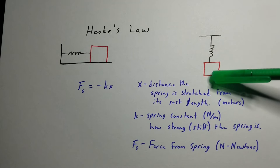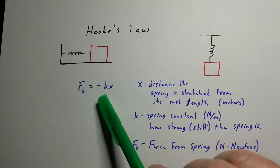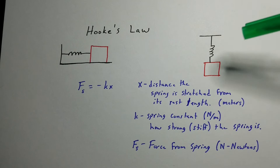Same thing over here. If I pull this down, the spring will want to pull up. If I push up, the spring will want to push back down. And so it's always a restorative force and that's why the negative sign is there because it goes against what you're doing to the spring.